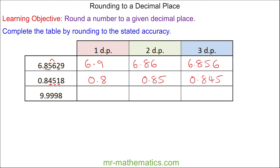Finally, to one decimal place the nine does round up the nine to give 10.0. For two decimal places the nine again rounds up the nine, which in turn rounds up the other nine, so it becomes 10.00. And for three decimal places, again the nine rounds up through the digits giving 10.000.